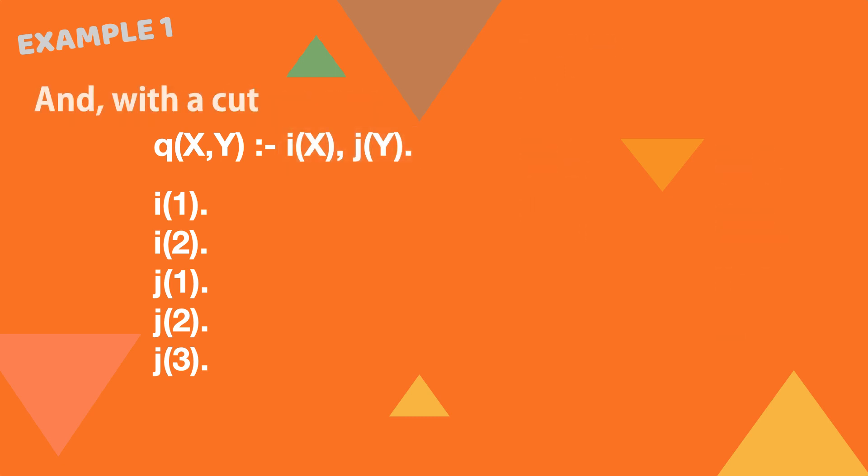What happens if we add a cut? Put the cut between i and j and the number of ways to succeed is halved. Let's see why by visualizing the search.